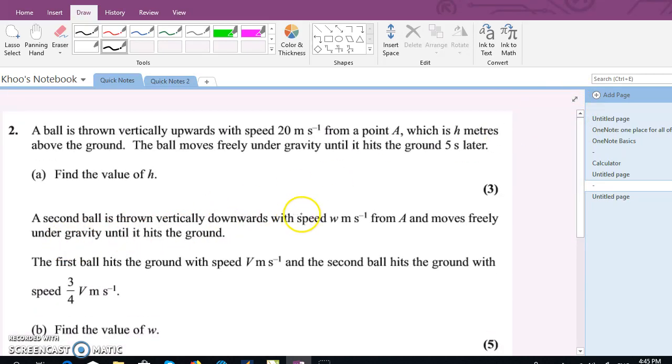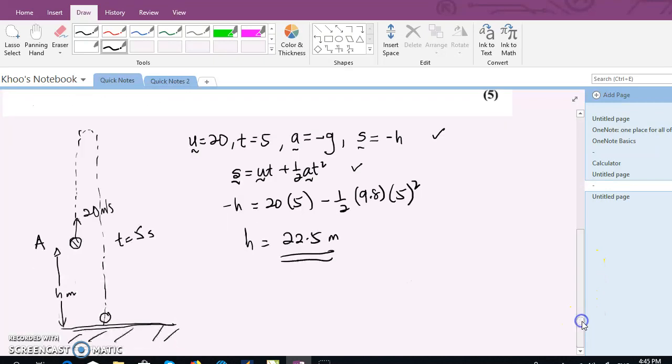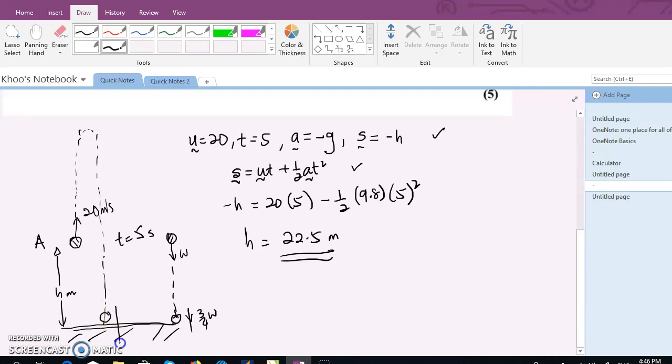Let's go to the second part. The second ball is thrown vertically downwards with speed w from A and moves freely under gravity until it hits the ground. First ball hits the ground with v meters per second, second ball hits at three-quarter v. Let's draw the second ball. The second ball is projected downward from the same point with speed w, and we are told that it hits the ground with a speed of three-quarter v, whereas the first one hits the ground with a speed of v.